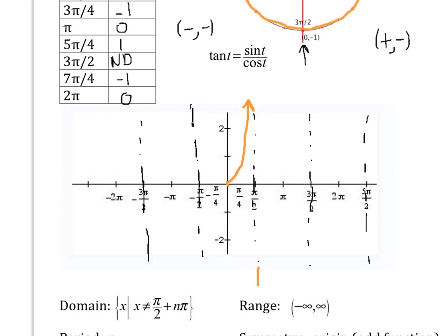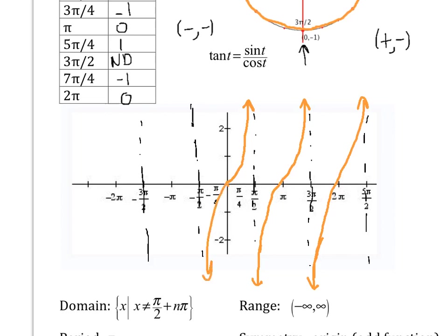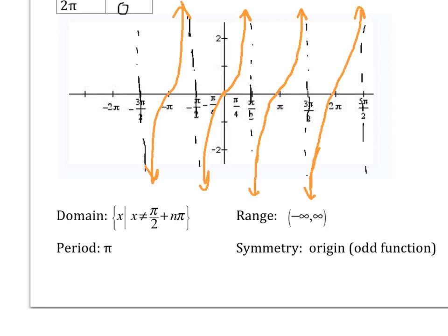As soon as you pass pi over two, since x becomes negative, the tangent comes back from negative infinity. As you get close to pi, the tangent is zero. In quadrant three the tangent is positive again, and as you get close to three pi over two the tangent goes to positive infinity. As soon as you pass three pi over two in the fourth quadrant, x is positive and y is negative, so you're coming back from negative infinity. The tangent function is odd — the ratio of an odd function divided by an even function — so it's symmetric with respect to the origin. The domain is x cannot equal pi over two plus n pi. The range is all real numbers. The period is pi, and it's symmetric with respect to the origin.